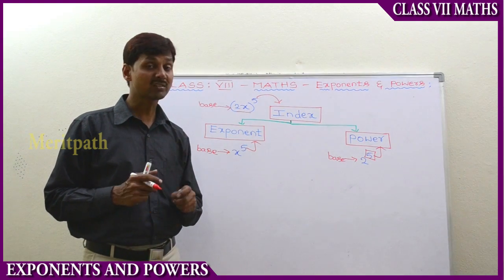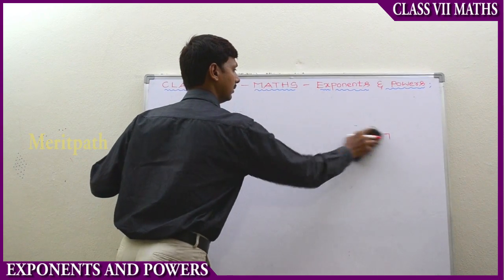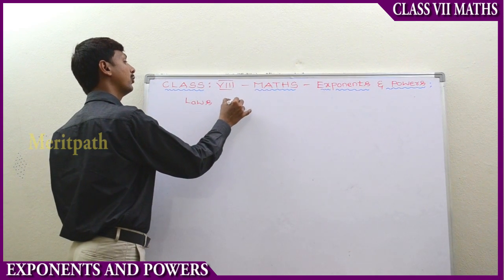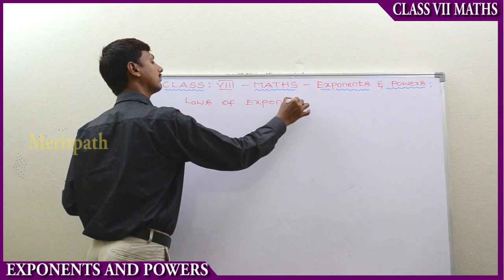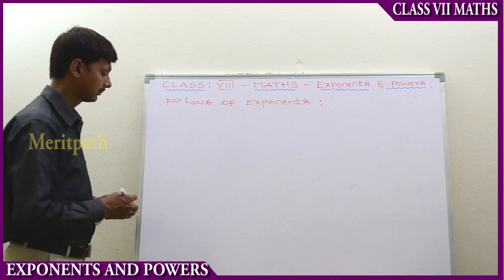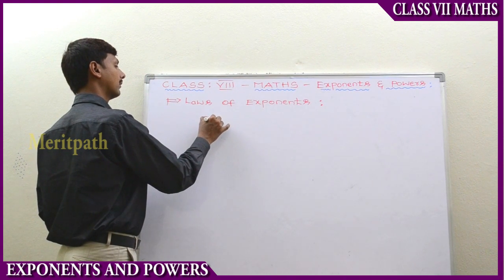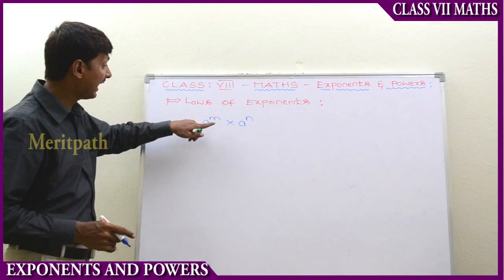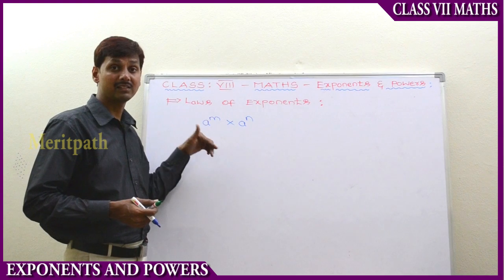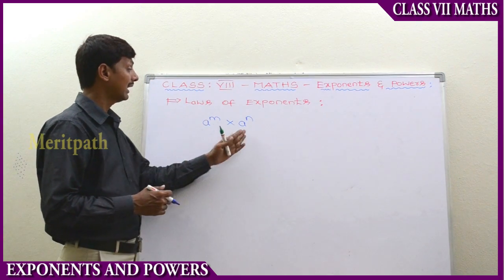Now let's go to the laws of exponents. The exponent is when a variable is raised. Some of the laws of exponents: let's take the first one — a to the power of m and a to the power of n. Here the variable is raised; we have taken m and n as the exponents because a is the variable.